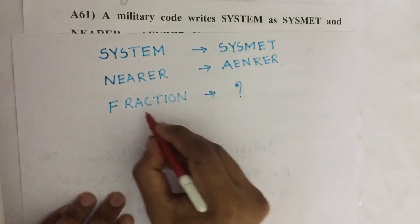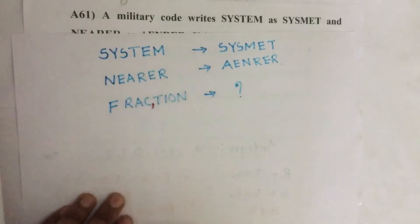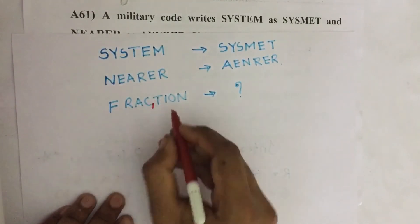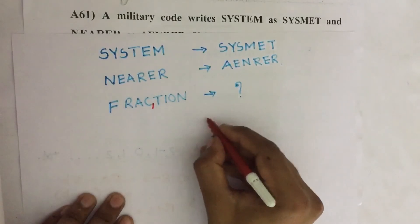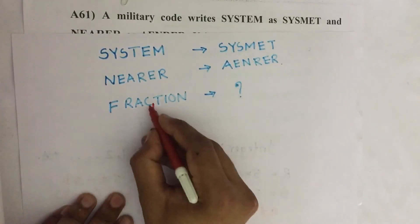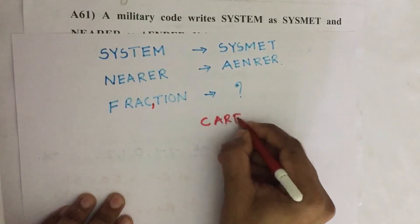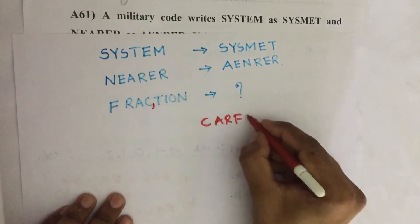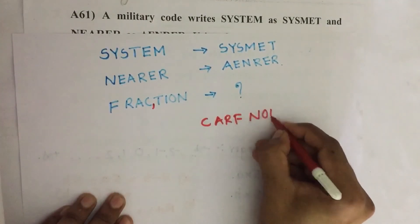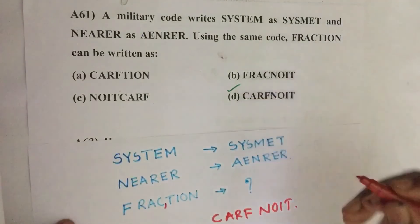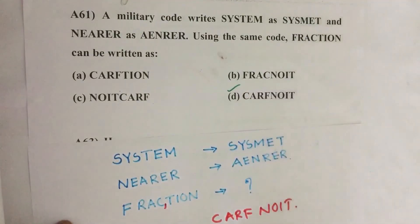Similarly here, FRACTION: first we split this into two words, FRAC and TION. Then reversing the two words, CARF and NOIT. This is our answer, option D: CARFNOIT.